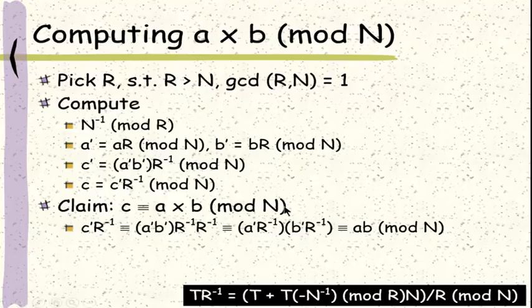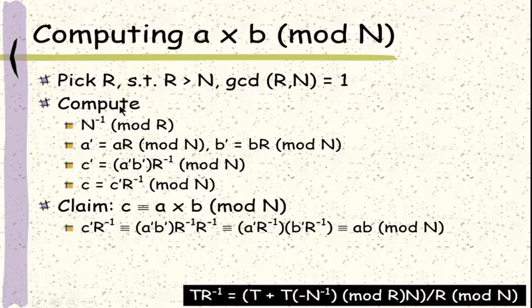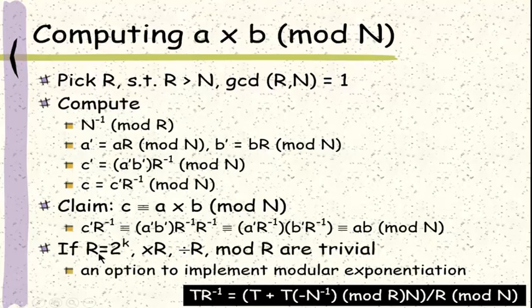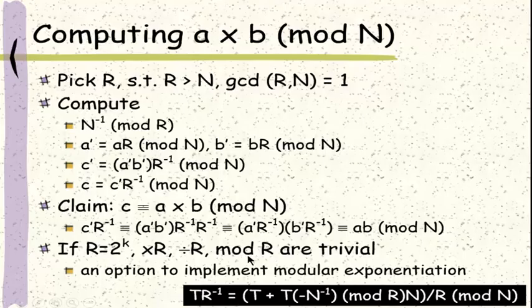What we see here is we pick r satisfying only two conditions: r must be greater than n, and r and n must be relatively prime to each other. As long as these two conditions are satisfied, we can pick any r we want. So when r happens to be a power of two, in a digital computer the multiplication by r will be a left shift by k bits, and the division by r or the mod r operation will be a right shift by k bits. So all these operations will be trivial. That is why, following the Montgomery reduction algorithm and picking r as a power of two, this gives us great potential to optimize the modular exponentiation.